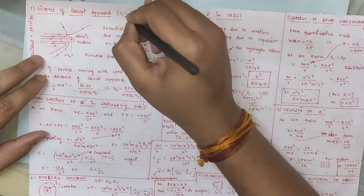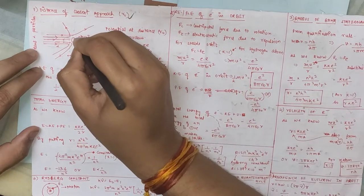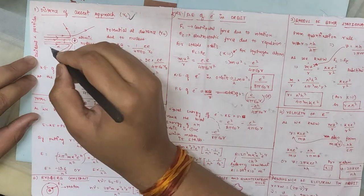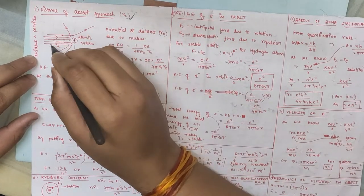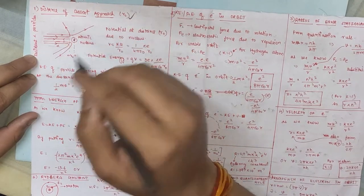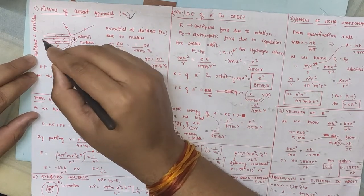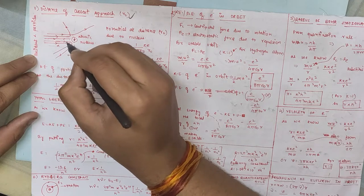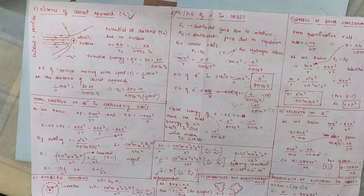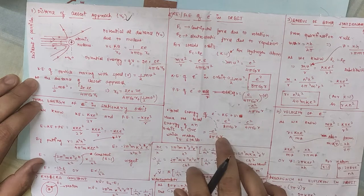First of all, we have the distance of closest approach. What is the distance of closest approach? We have an alpha nucleus — it is a helium positive nucleus. When we throw it at some distance toward the nucleus, because of electrostatic repulsion it gets repelled. There will be a minimum distance between them, and that minimum distance is called the distance of closest approach.